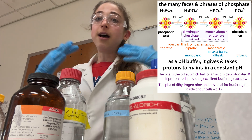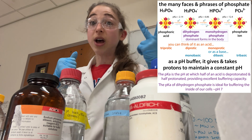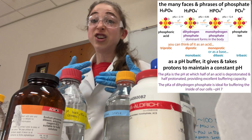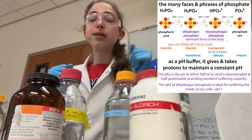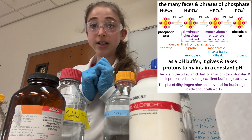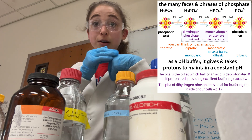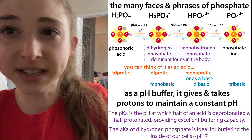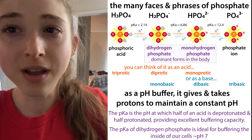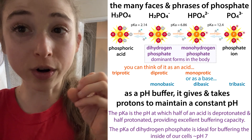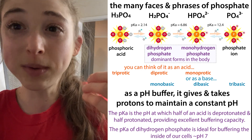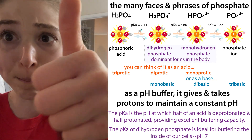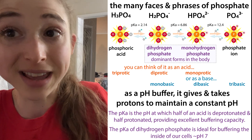If you have the acid form — the monobasic form — that means those other two hydrogens are up for grabs as acids, which is why we call it diprotic. At the pHs we're typically using these buffers — like 5.8 to 8 or so — we're really only dealing with one proton coming and going. That's the one with the pKa around 6.86, which gives you a good buffer about one pH unit on either side, hence the 5.8 to 8 range.